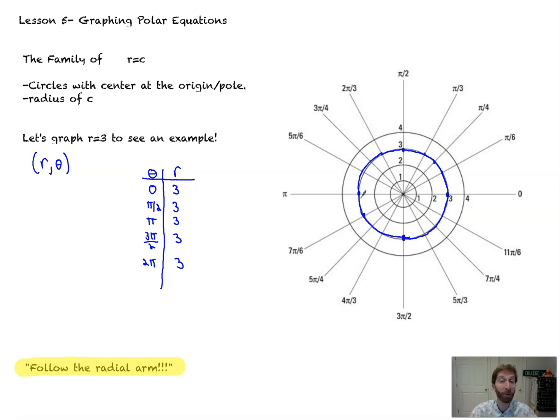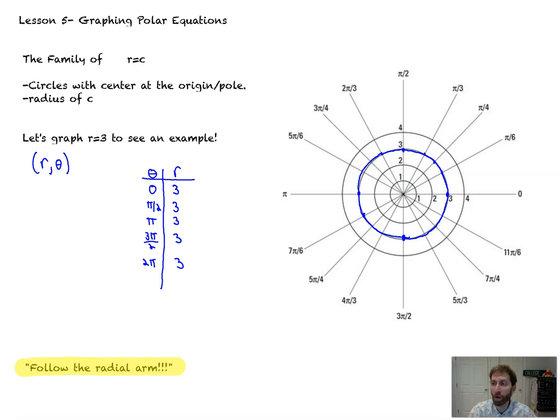That's r equals 3. So r equals any constant gives you a circle of that radius, centered at what we call the pole, or the origin.